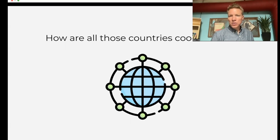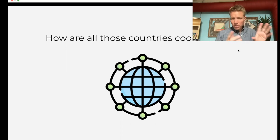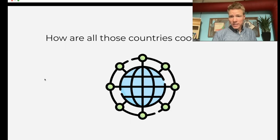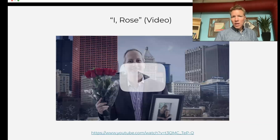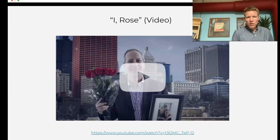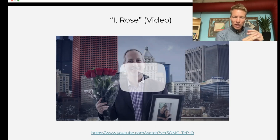So how are all those countries coordinated? How does that happen? How do 43 countries, different factories, different people, all come together to make the iPhone? It's a fantastically complicated thing. And the answer is markets — markets are the coordinating mechanism. So we have our first video here on the magic of markets.